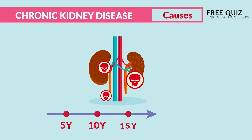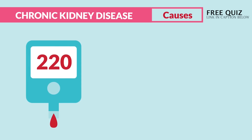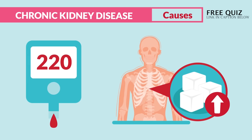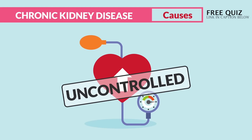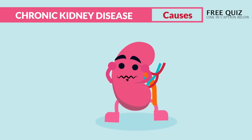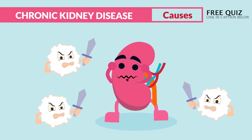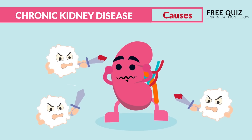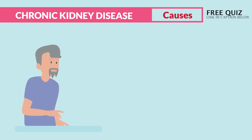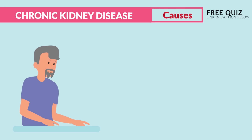The most tested causes for chronic renal failure come from long-term, years and years of chronic damage. You have to know that uncontrolled diabetes from uncontrolled high sugar is a major cause, as well as uncontrolled hypertension from that uncontrolled high blood pressure, and even unchecked autoimmune diseases where the body attacks the kidney.